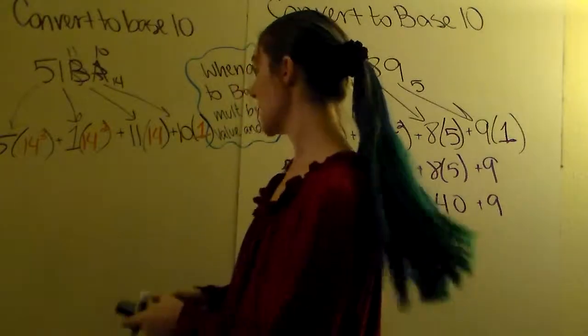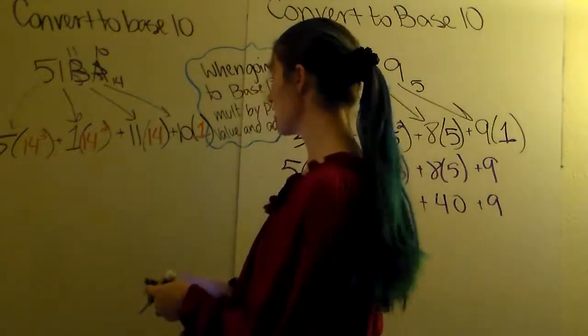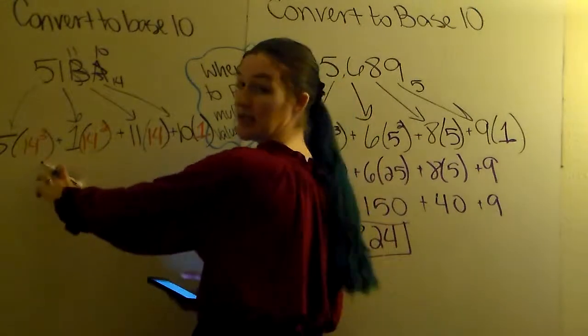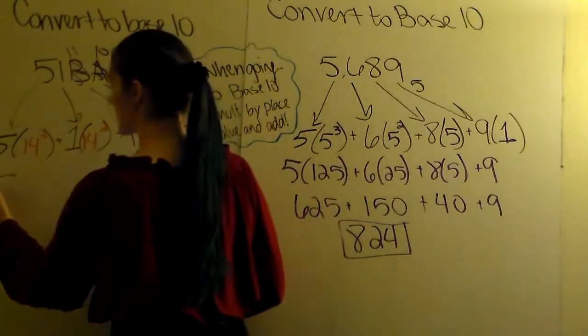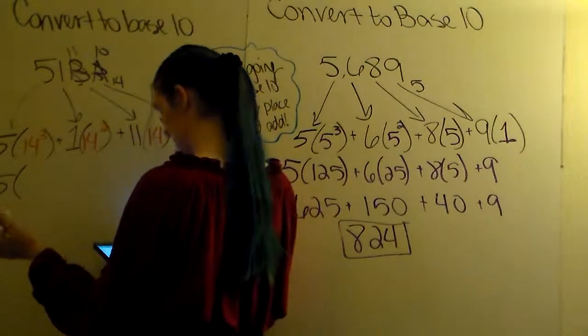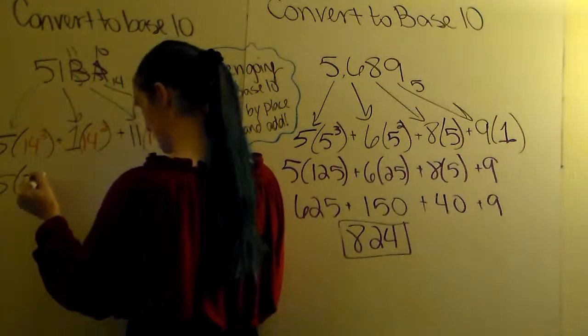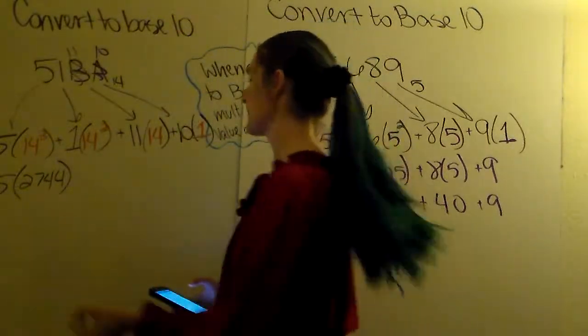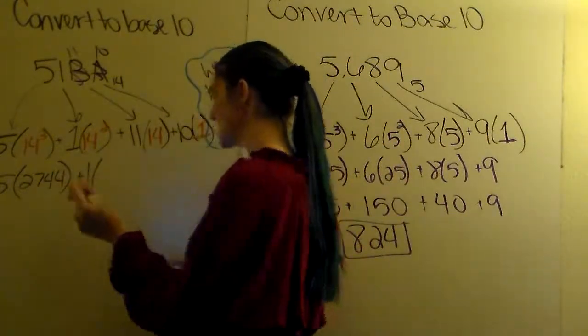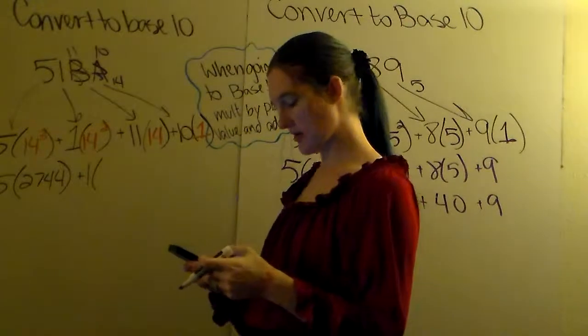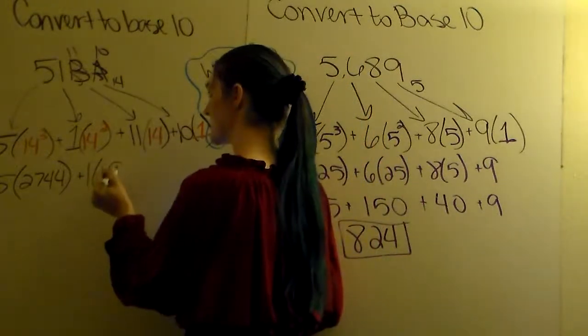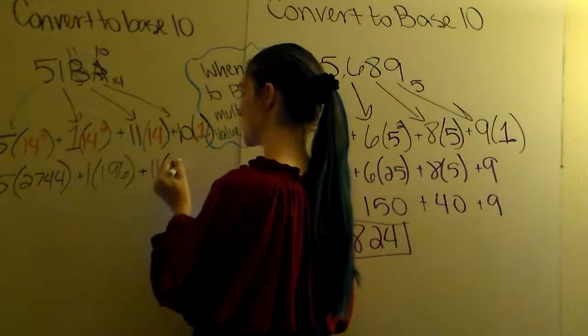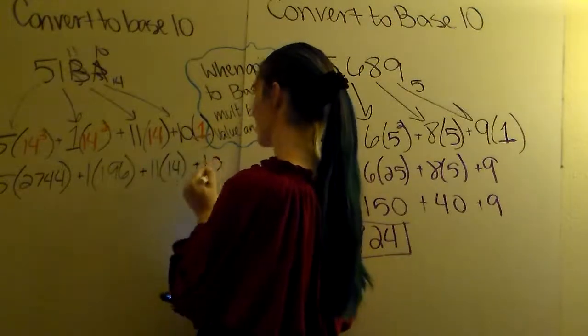Don't try to do this math in your head. Make sure you've got a calculator with you. So 14 times 14 times 14 is 14 cubed. So we've got 5 times 2,744 plus 1 times 14 squared is 196 plus 11 times 14 plus 10.